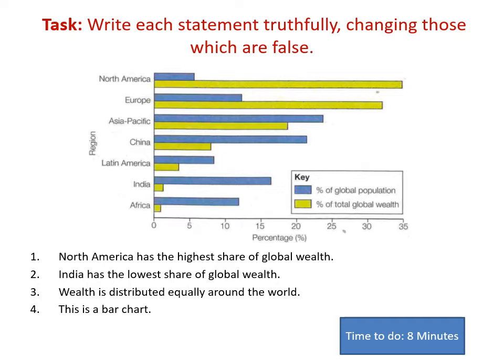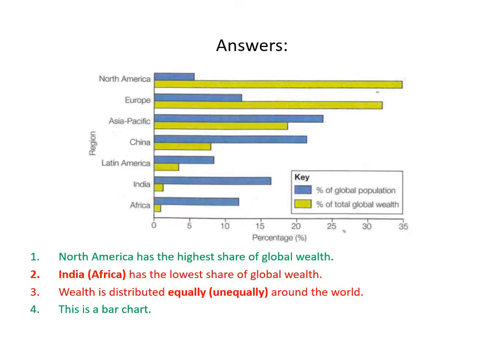Let's start looking at the whole world — we're looking globally in this topic. There are four statements. I'd like you to look at this graph and write each statement truthfully. Put the numbers one to four in the margin and write out those statements, correcting anything that's wrong. North America does have the highest share of global wealth and this is a bar chart. However, India does not have the lowest share of global wealth — it's actually the whole continent of Africa. Just take a moment to consider that India as a country in Asia has a higher percentage of total global wealth than the entire continent of Africa.